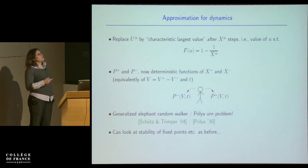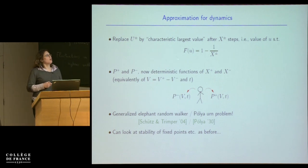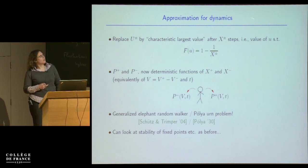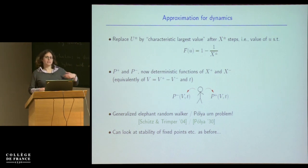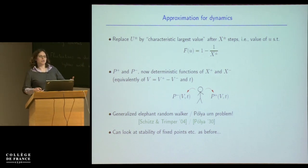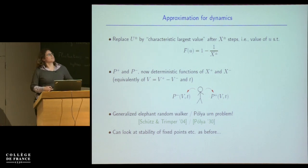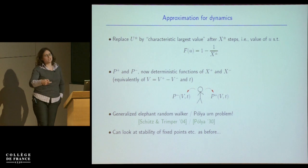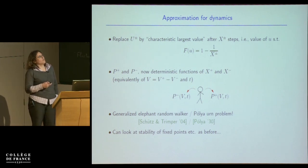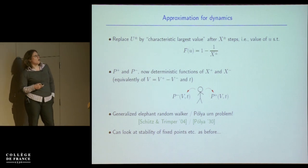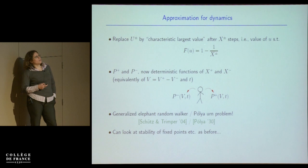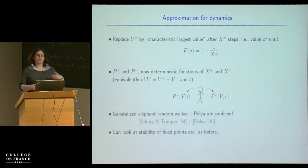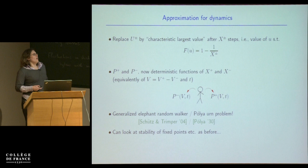You can see this within a simple approximation by replacing U plus and U minus — which are fluctuating random variables — by the so-called characteristic largest value after the given number of right and left steps. This is the quantity from extreme value theory that tells you typically how the largest value from a particular sample scales. Formally it's defined as the value of U such that the CDF equals 1 minus 1 over the number of trials. Plugging that into P plus and P minus makes them deterministic functions of the velocities right and left — and the model now looks much like the current-dependent models from the first half of the talk.